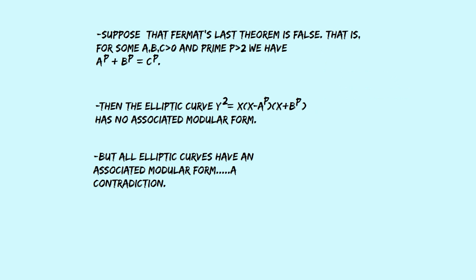So, here we have a contradiction. We're saying that all elliptic curves have an associated modular form, but we've got an example above of an elliptic curve that has no associated modular form. So, because of this contradiction, we can only surmise that our initial supposition is false. And that means that Fermat's Last Theorem must be true.